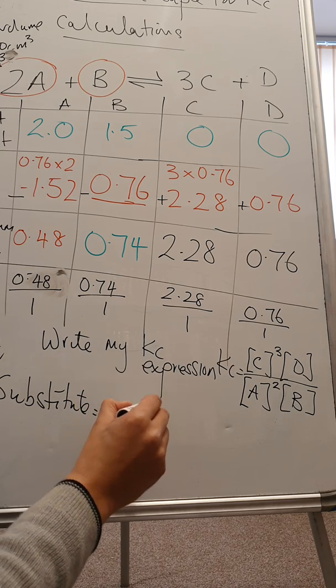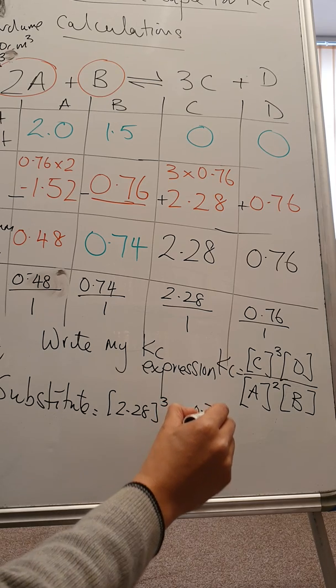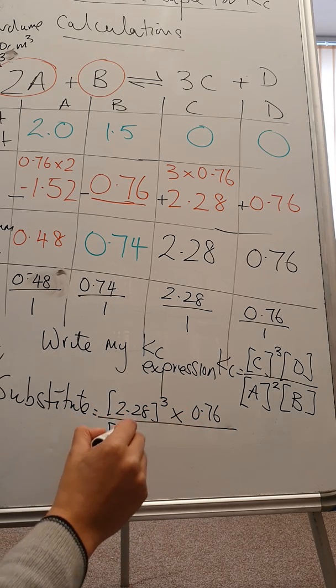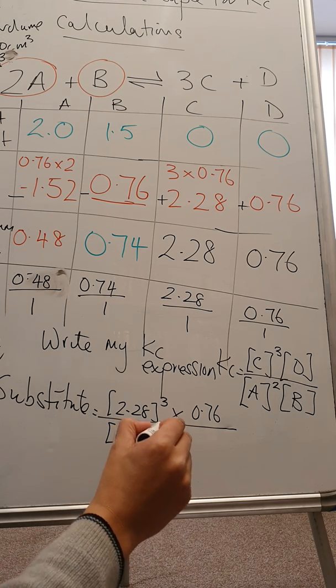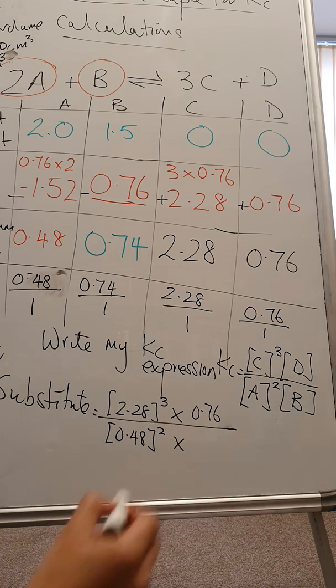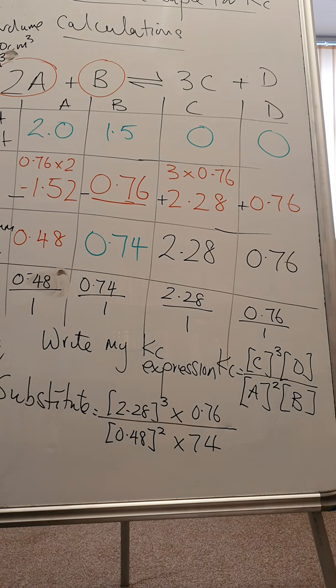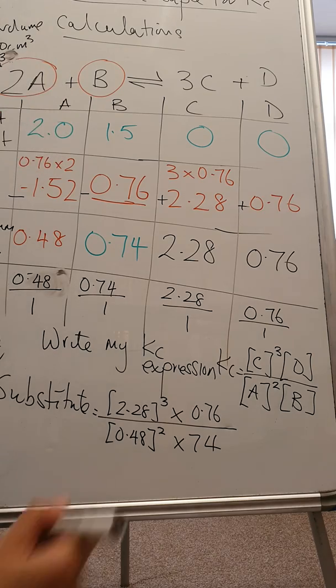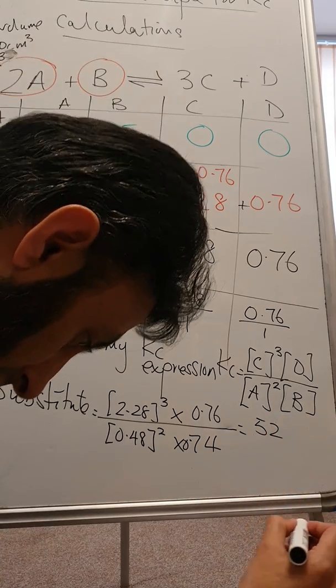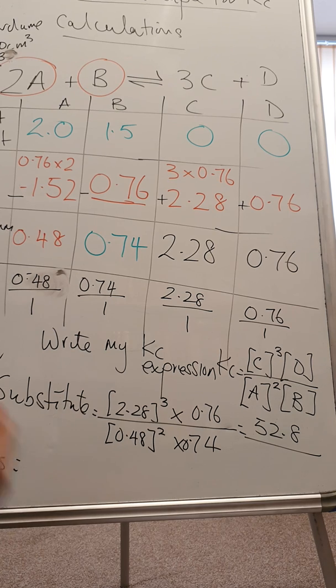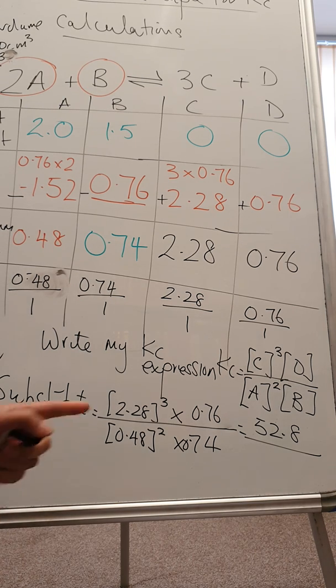Substitute 2.28 cubed times 0.76 divided by 0.48 squared times 0.74. Let's do the calculation: 2.28 cubed times 0.76 divided by 0.48 squared times 0.74, and I have an answer of 52.8.